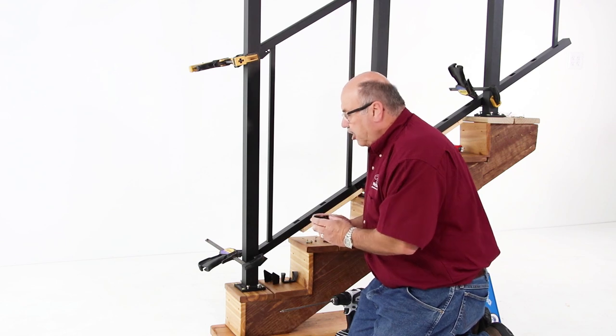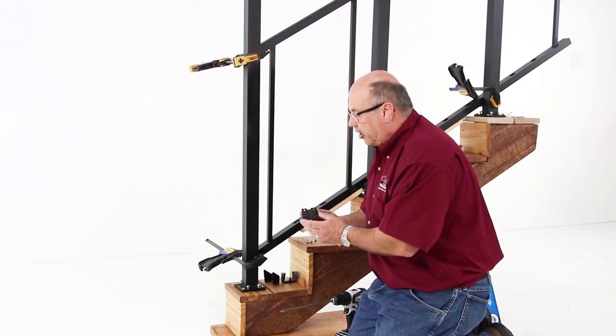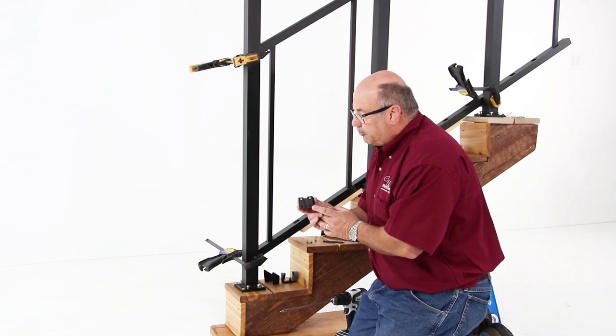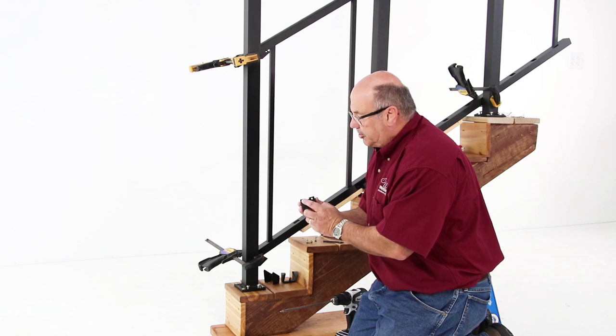We're now ready to attach the hardware. For simplicity's sake, I have the first screw already installed in all of our hardware. On the bottom side of the stairs, both top rail and bottom rail, you have a choice of four entry points. You want to use two of them.